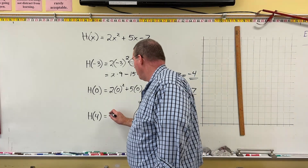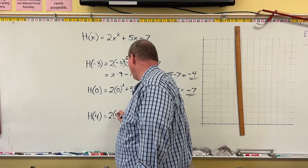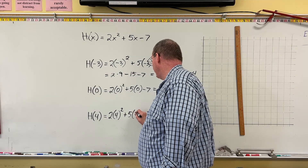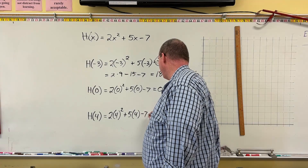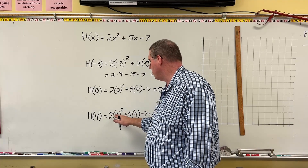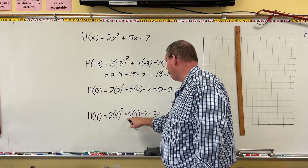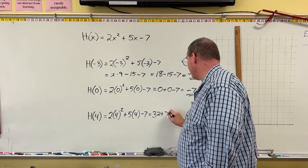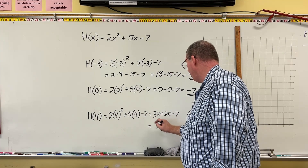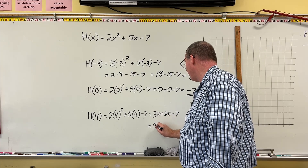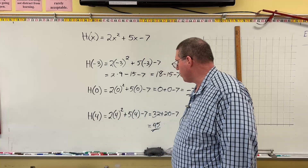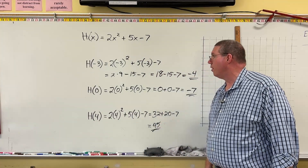For H(4), we rewrite it as 2(4)² + 5(4) − 7. Four squared is 16, and 2 × 16 = 32. Then 5 × 4 = 20. So we have 32 + 20 − 7: 32 + 20 = 52, and 52 − 7 = 45. Therefore the input 4 is associated with the output 45.